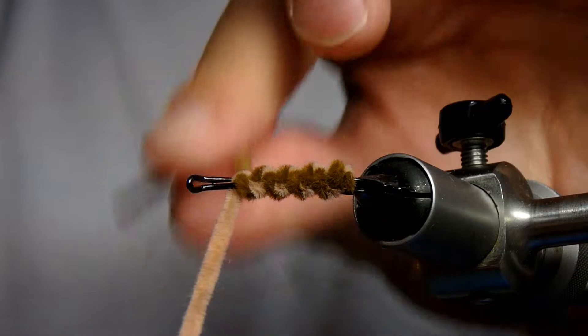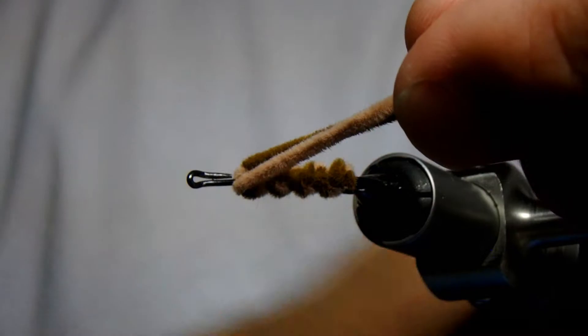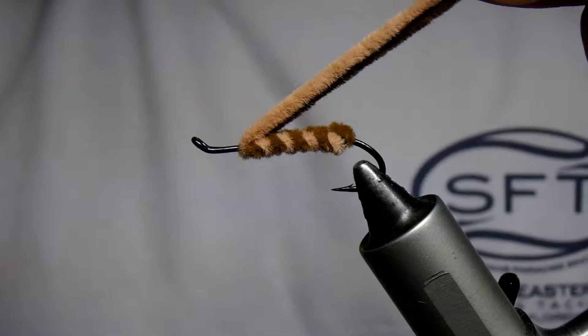Now, once you get to the end of where you want your weave to end, you have to tie your thread back in. This is one of the trickier parts. So grab both of your strands and pull them nearly straight up and kind of towards the back of the hook like this.